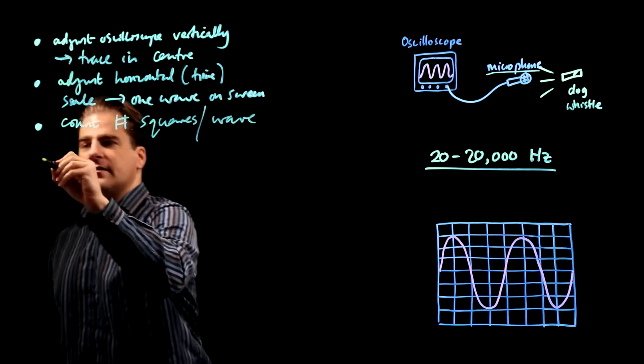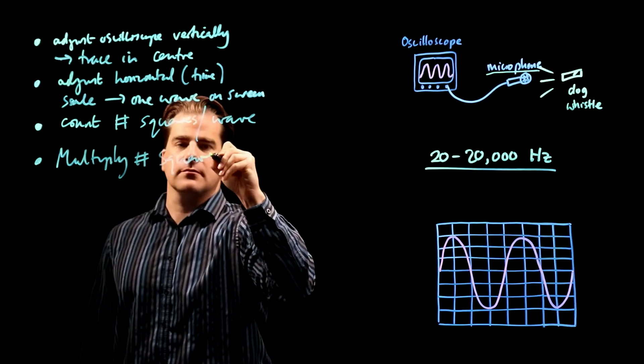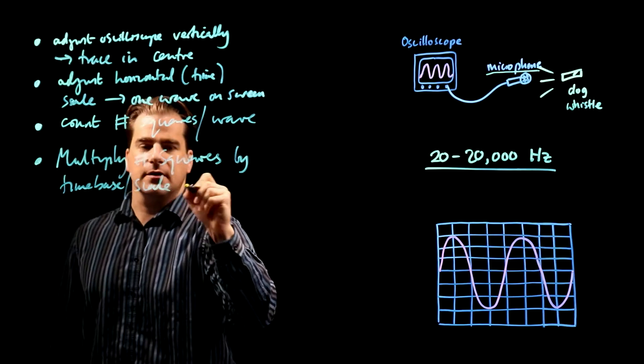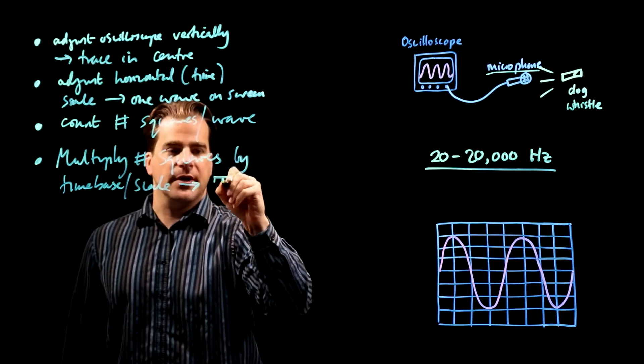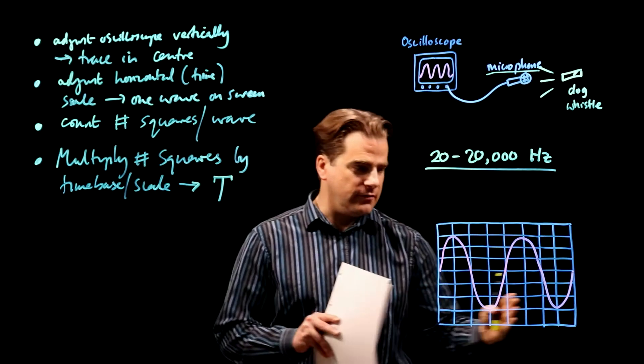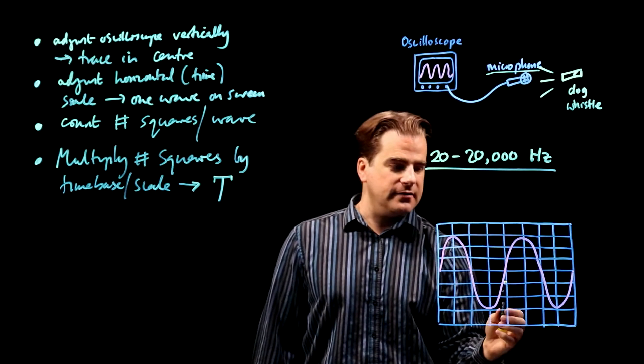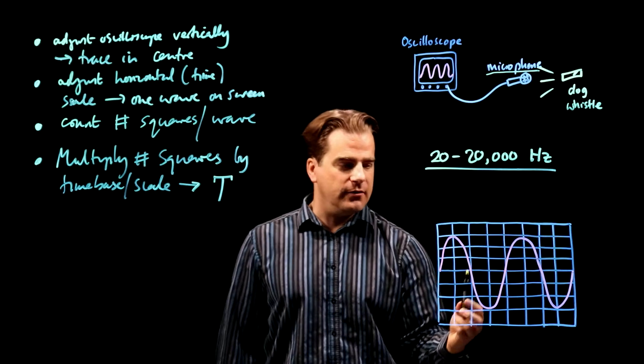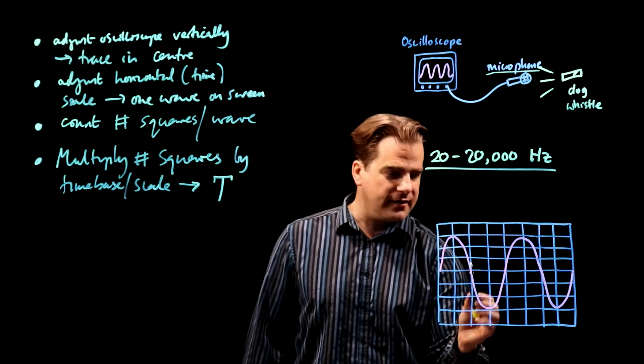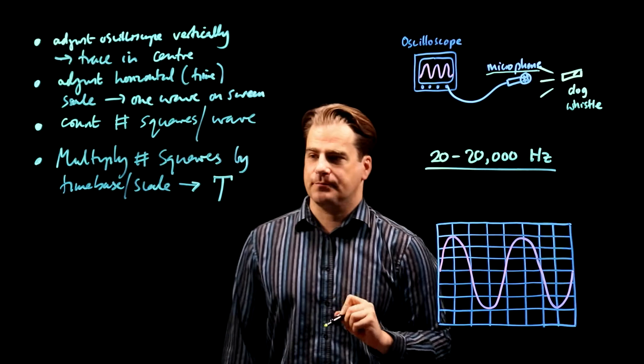Multiply the number of squares by the time base. Time base or the time scale, and that will give you the period. On the knob on the oscilloscope, you adjust it to adjust the horizontal time scale. And depending on the scale, it'll tell you on the knob how many squares for that setting correspond to what time. So that's the time base. You just multiply what one square is, the time base, by the number of squares to get the time for one wave. And of course, the time for one wave is the period.